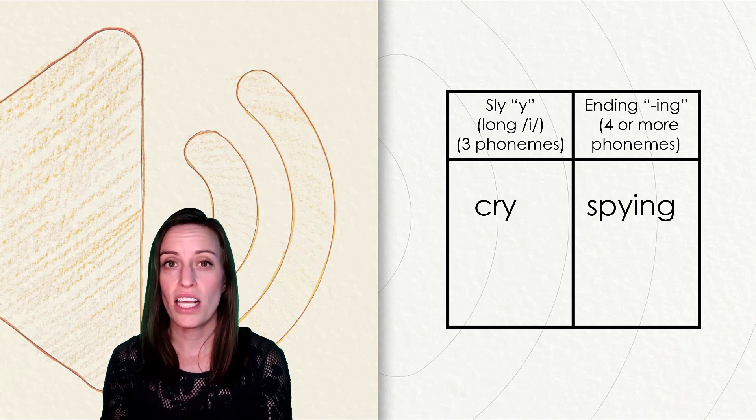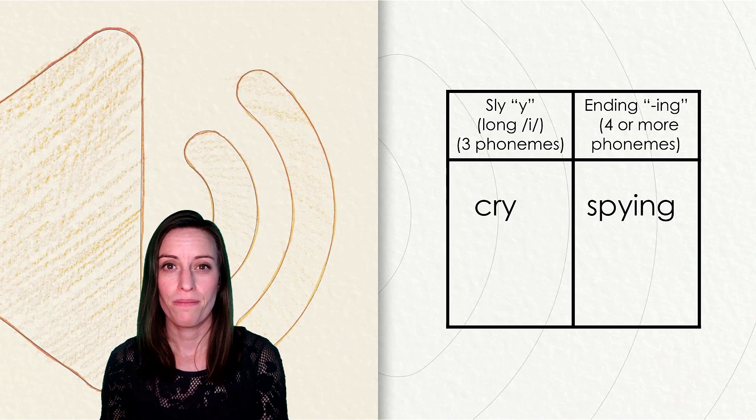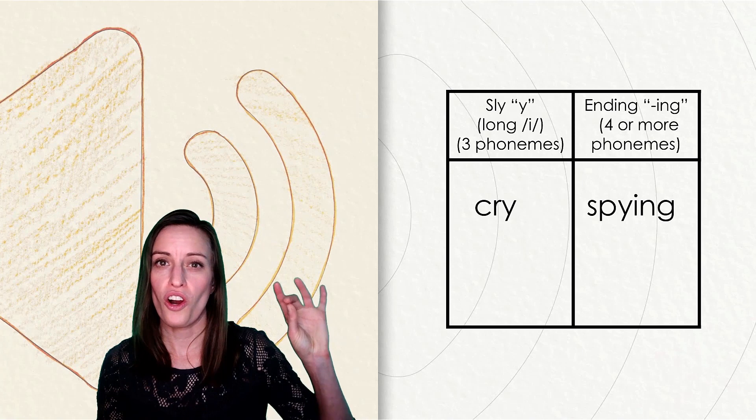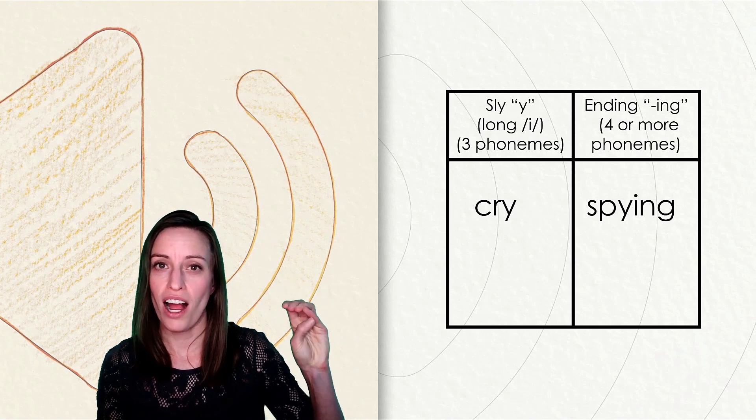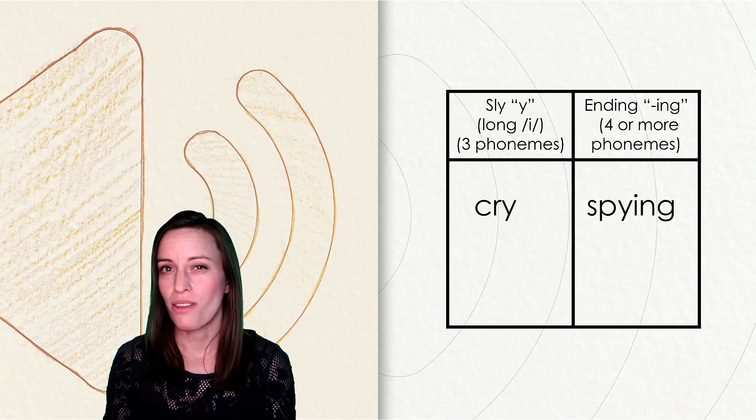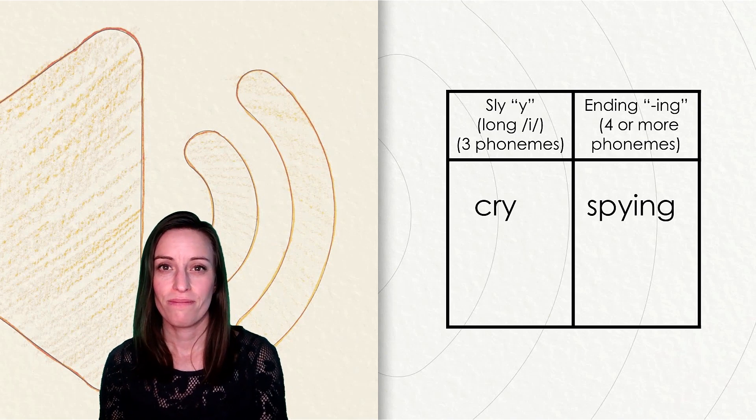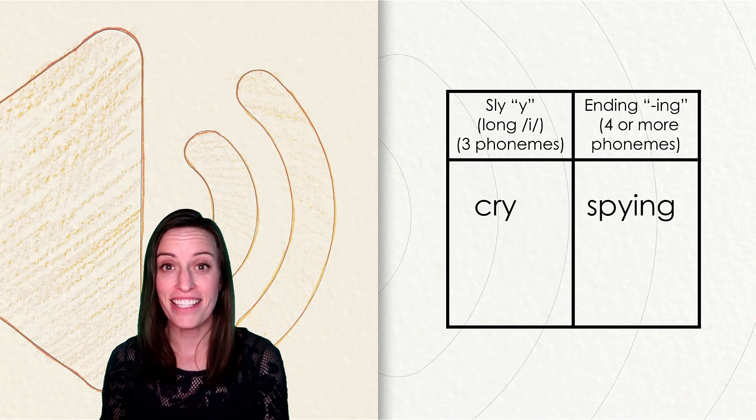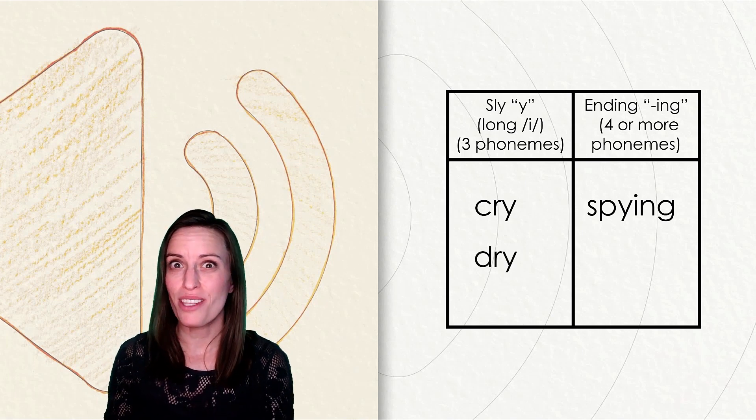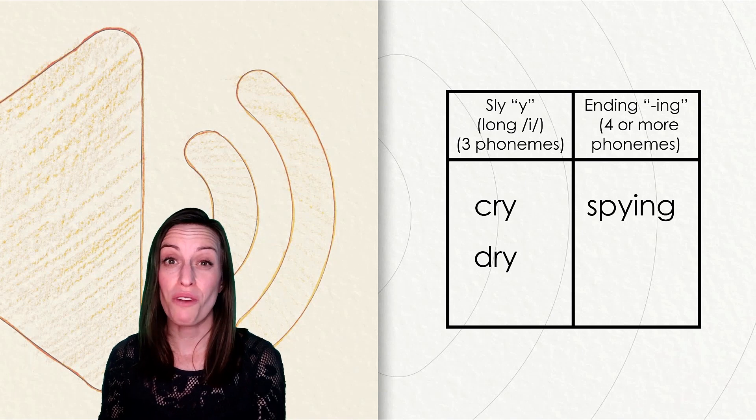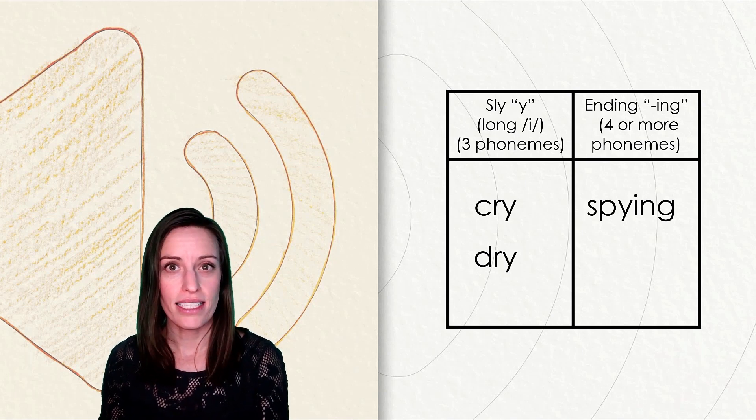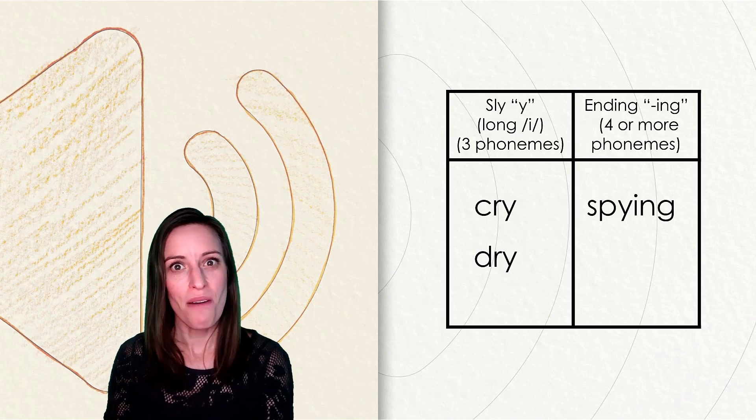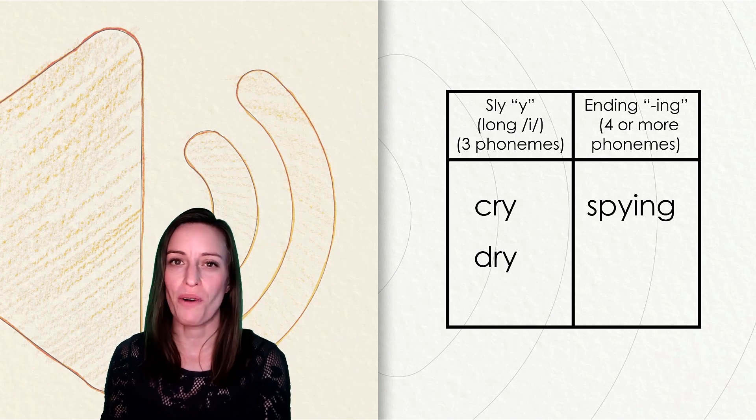Let's try one more word together. The word is dry. Tap out that word. D-r-i. Dry. Where do you think it belongs? I can't fool you. You're right. The word dry goes in the first column. It has just three sounds and it has that sly y at the end. Great job playing your first round of Sort It Out.